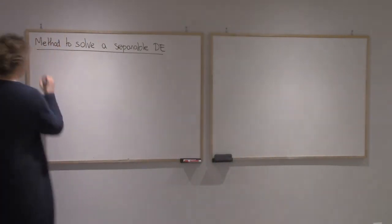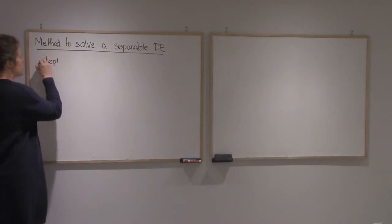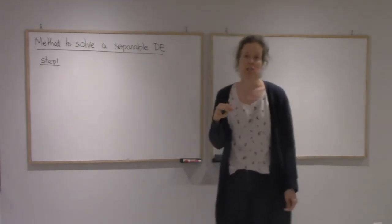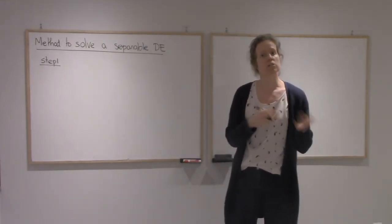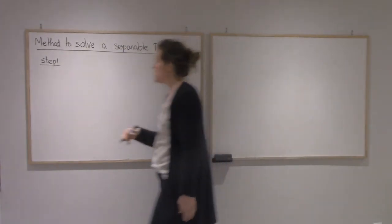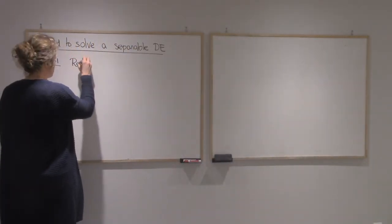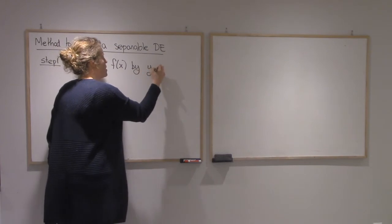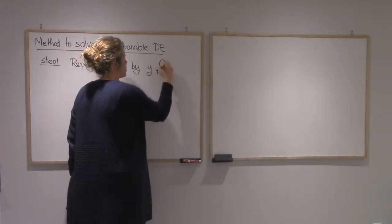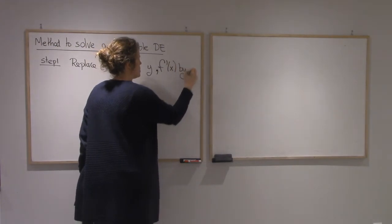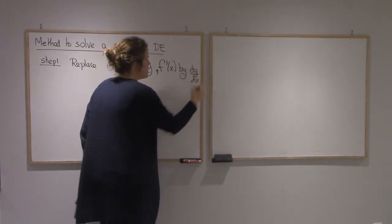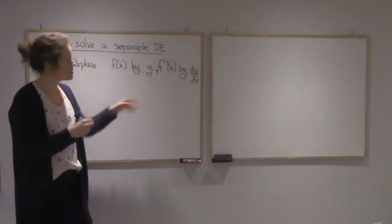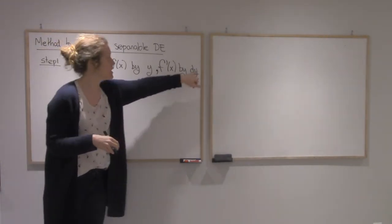Alright, so the first thing you do: if the differential equation is given to you with a function on it, f of x or f of t, then you change it to y so that it is a variable and you can integrate. So replace f of x by y and f prime by dy over dx. Now I'm writing it as if I knew x was your variable. If a variable is something else then you just adjust. It might be f of t, f prime of t, then it's dy over dt.